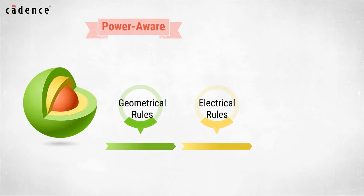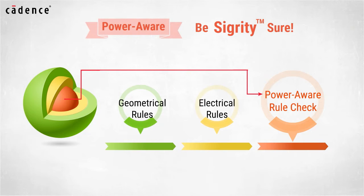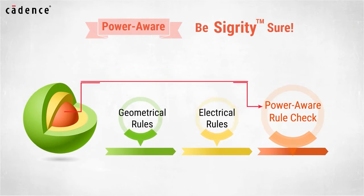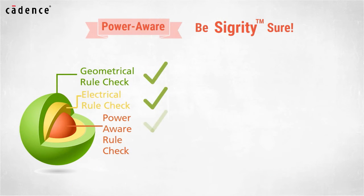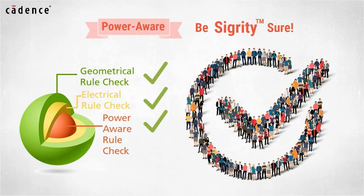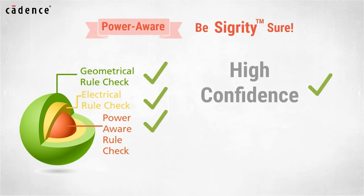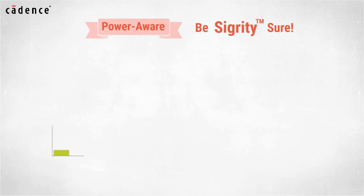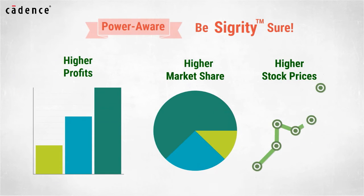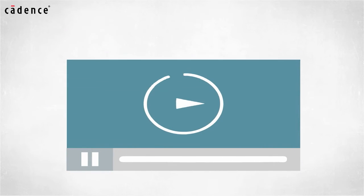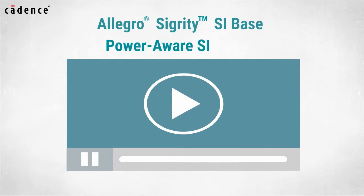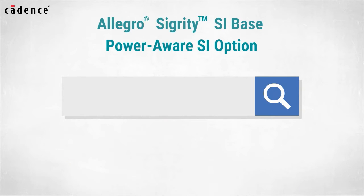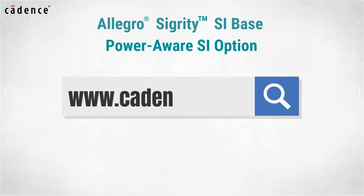But now with the power aware rule checks available in Sigrity technology, PCBs can be more effectively screened by PCB designers. Combining this with power aware detailed simulation, design teams can have high confidence that their designs will not only work in the lab but will also work long term in the field. The result may likely be higher profits, higher market share, and even higher stock prices. In today's video you will see us utilize the Allegro Sigrity SI base and power aware SI option. To learn more about these products, visit us at www.cadence.com.